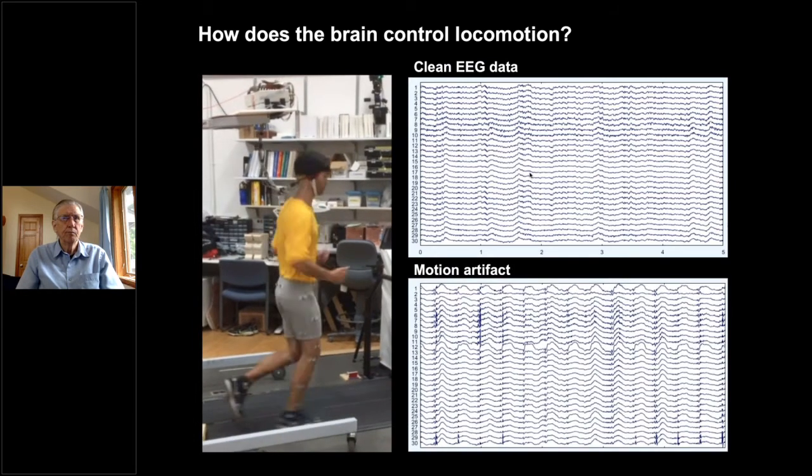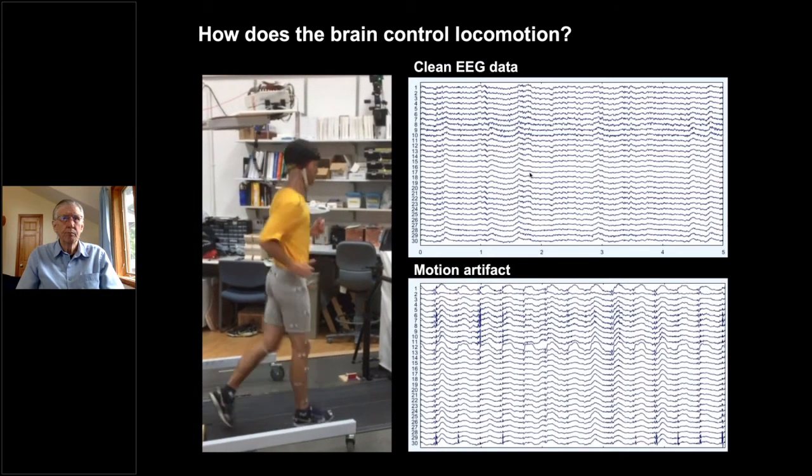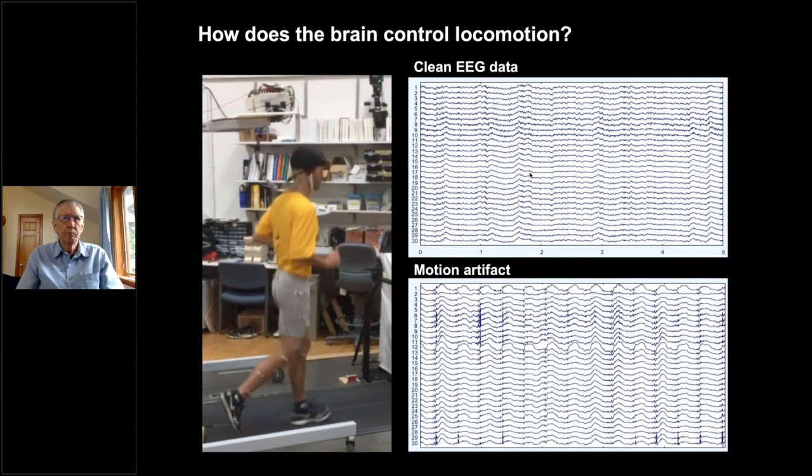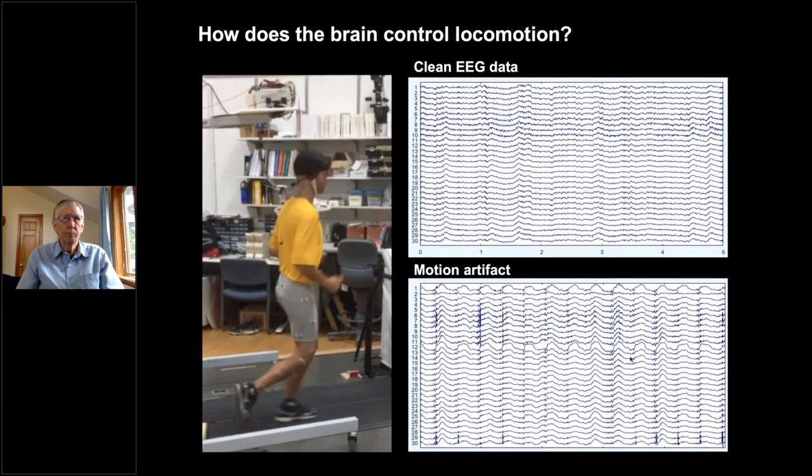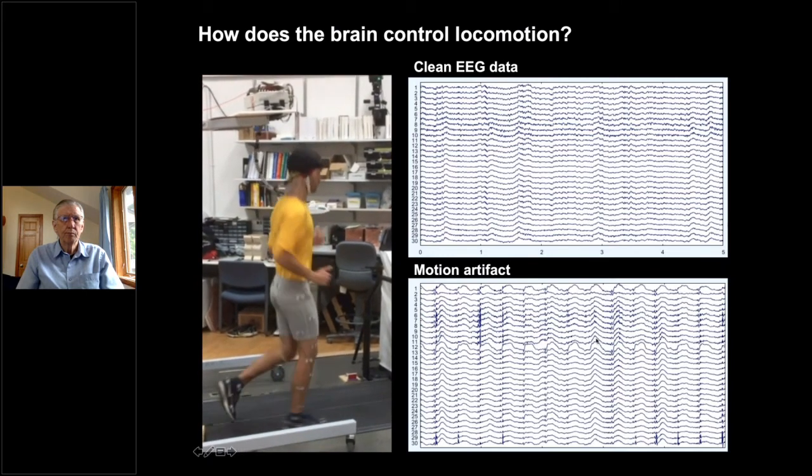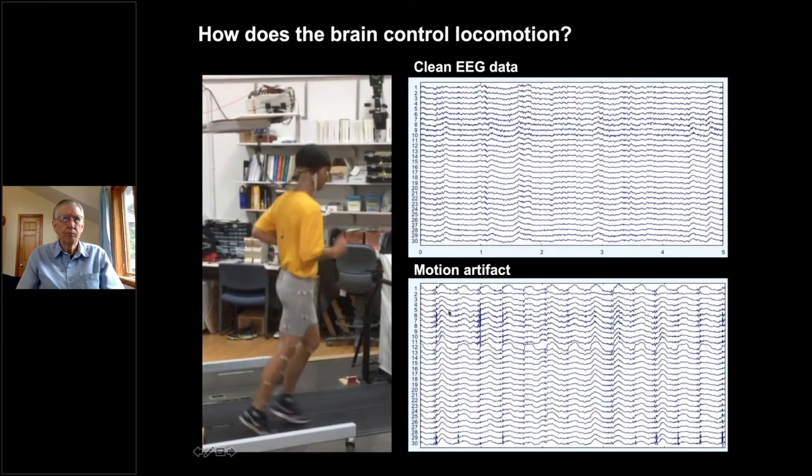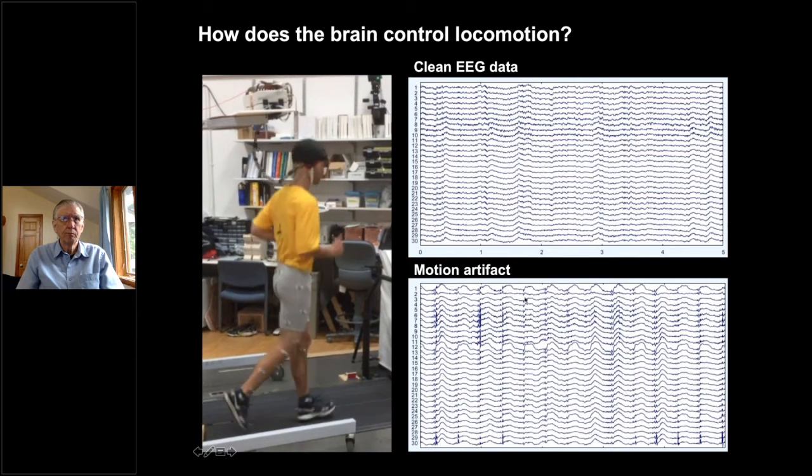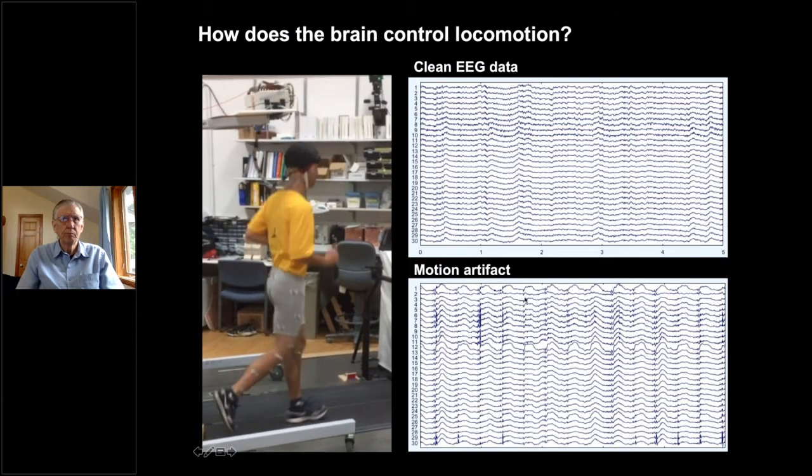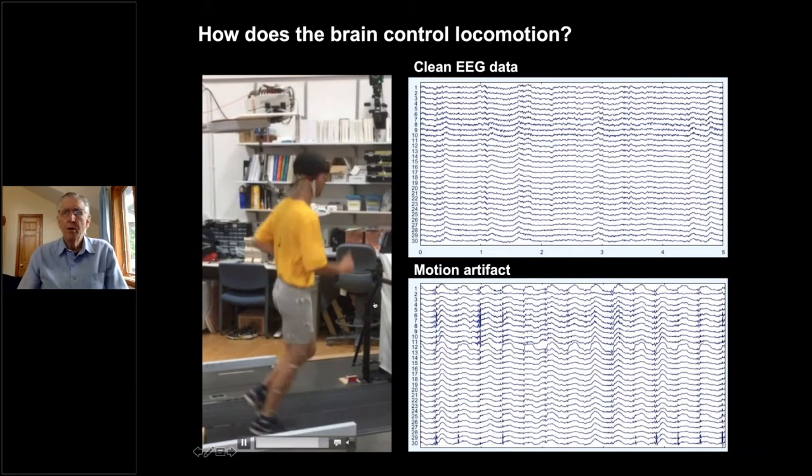And then you run into this nightmare scenario where if you have someone walking or, at worst case scenario, running on a treadmill, the fluctuations in these signals are basically, at face value, unrecoverable. It's essentially just following the accelerations of the head, the result of the ground reaction force moving up the body. So, how do we address this head-on? If you want to understand anything about what's going on in the brain, we're going to need to understand the causes of most artifacts.